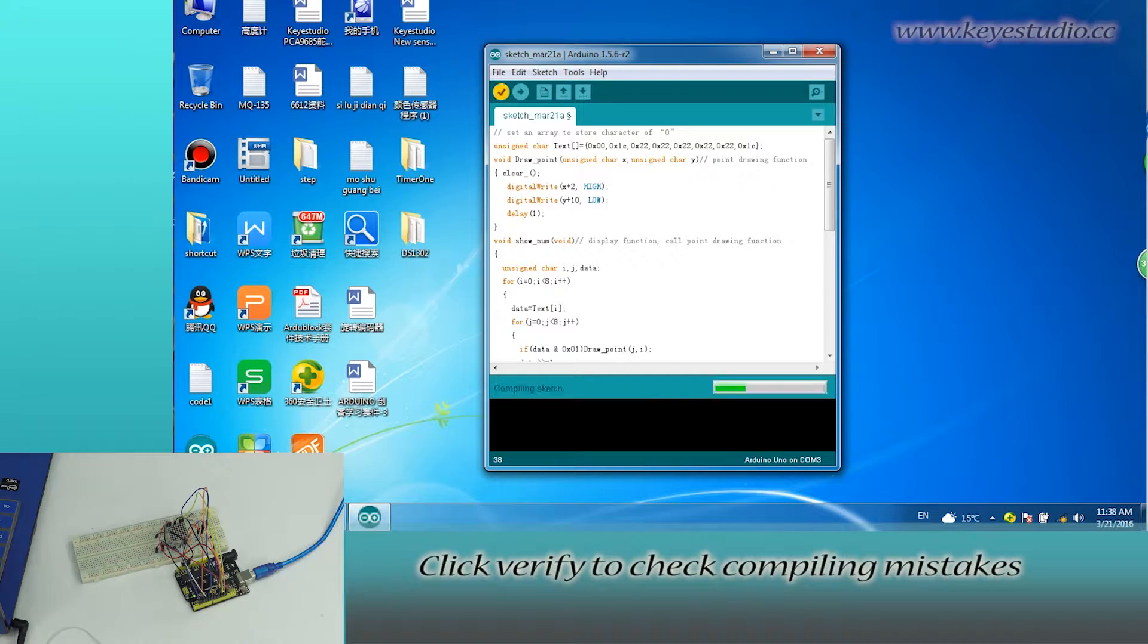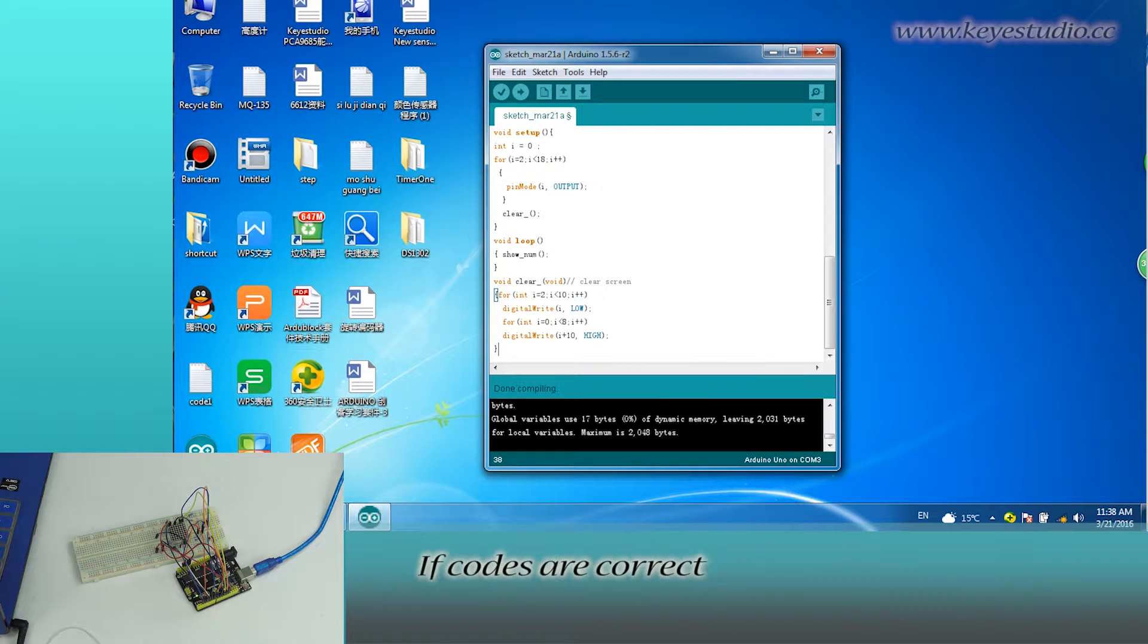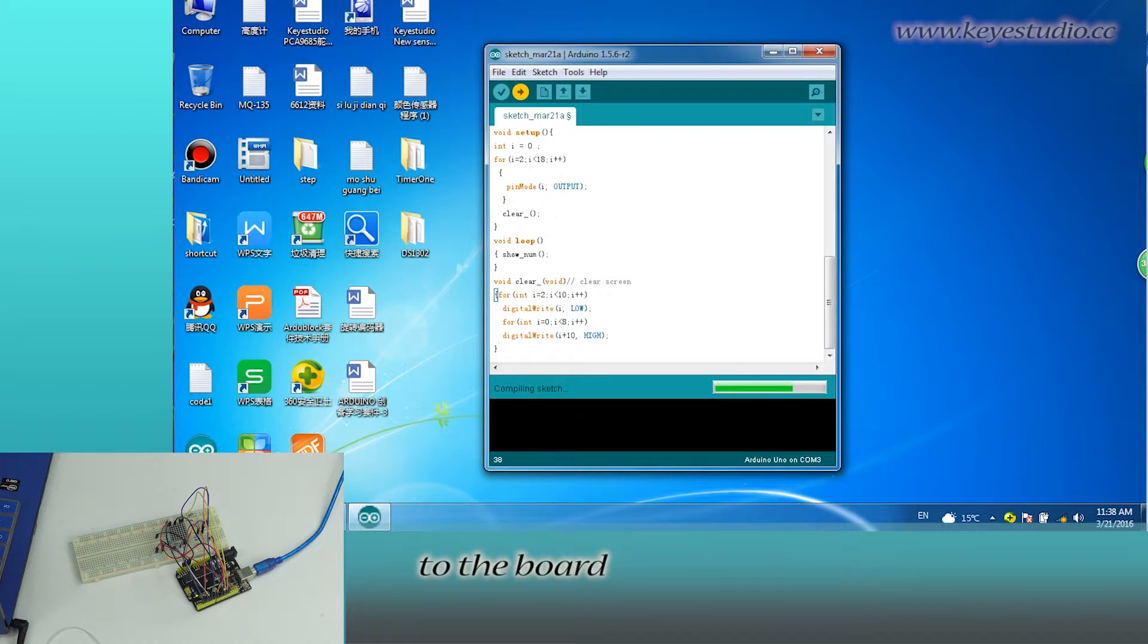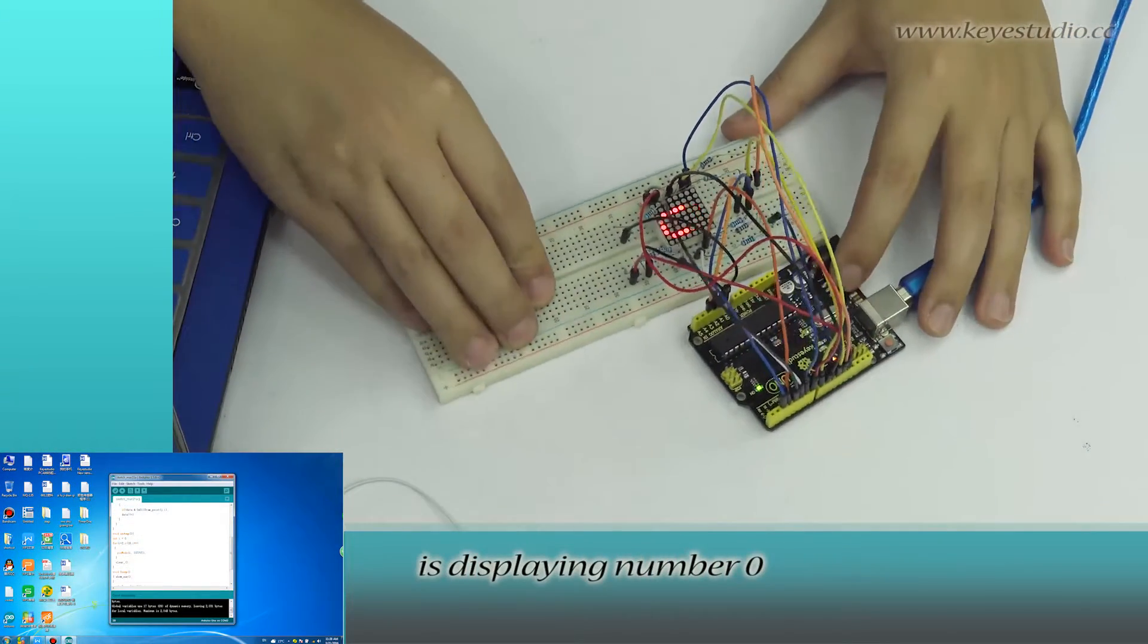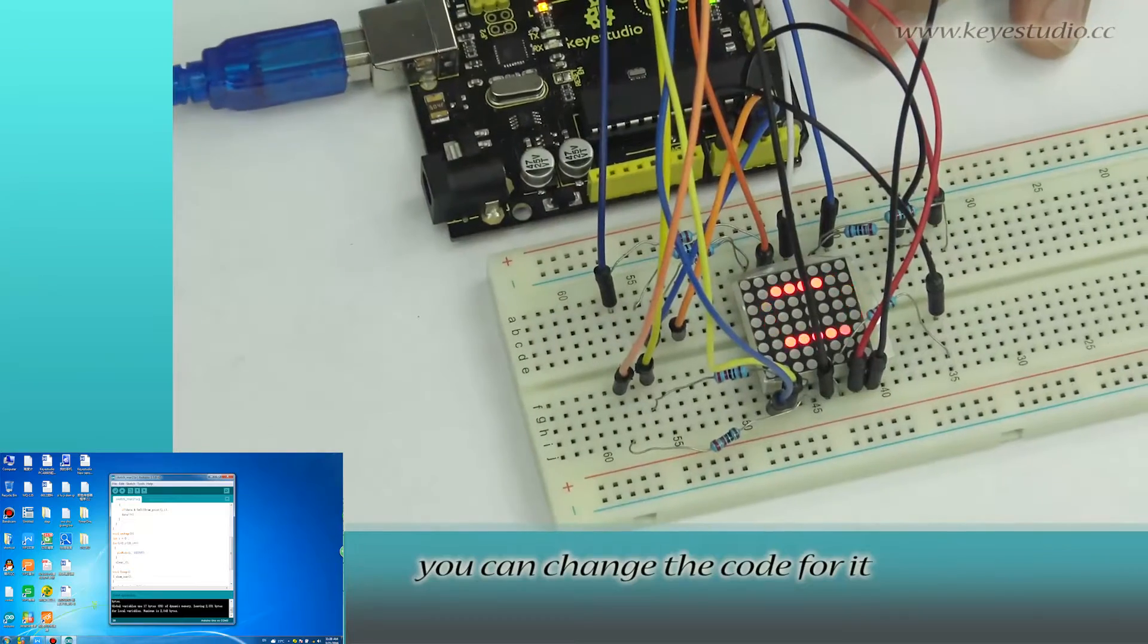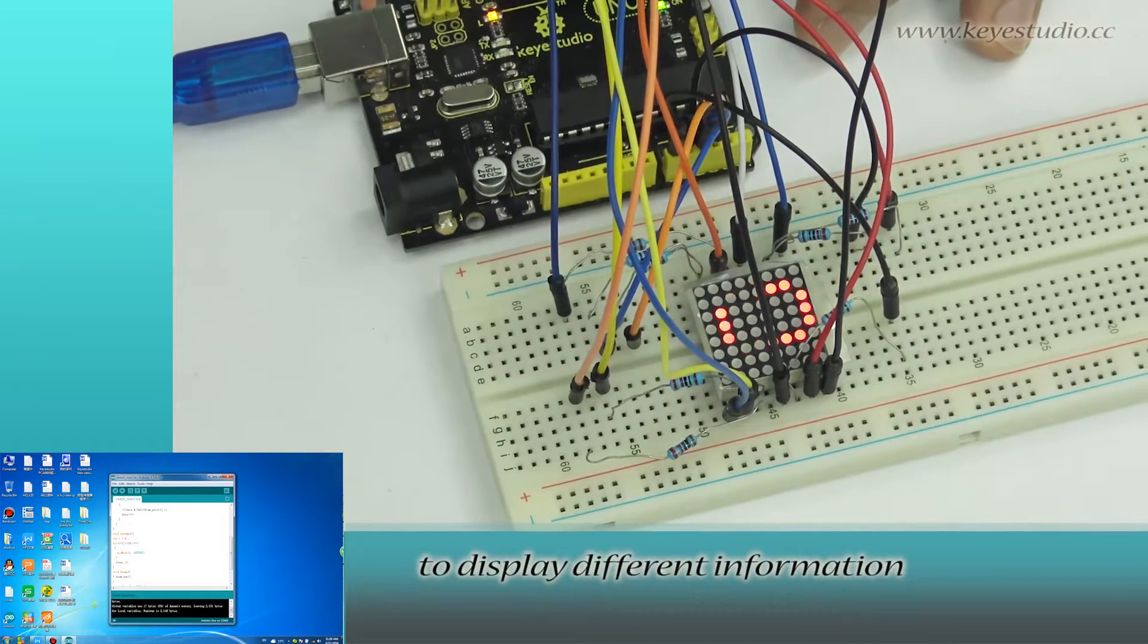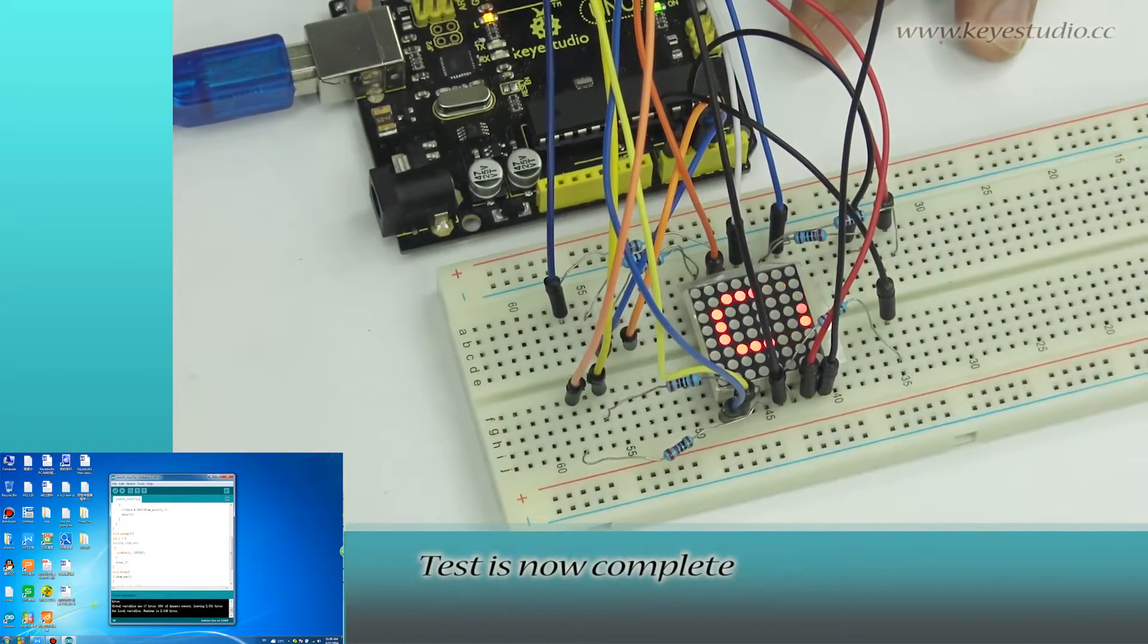Click verify to check for compiling mistakes. If codes are correct, click upload to upload the program to the board. After uploading is done, you can see the LED matrix is displaying number 0. Of course, you can change the code for it to display different information. Test is now complete.